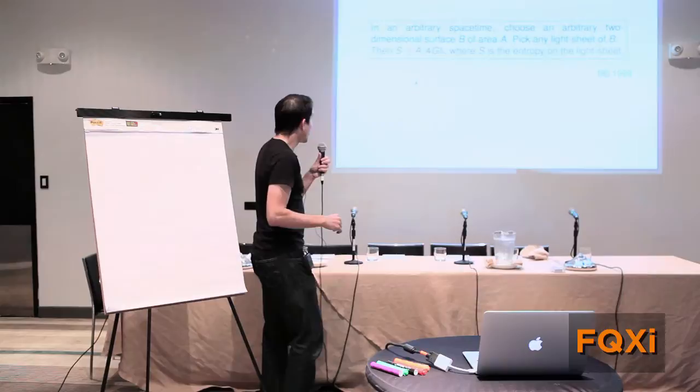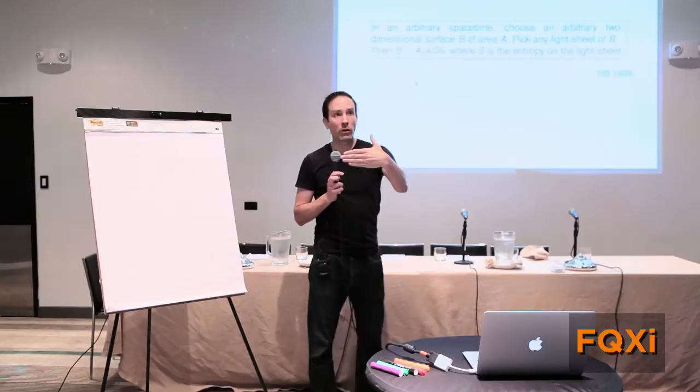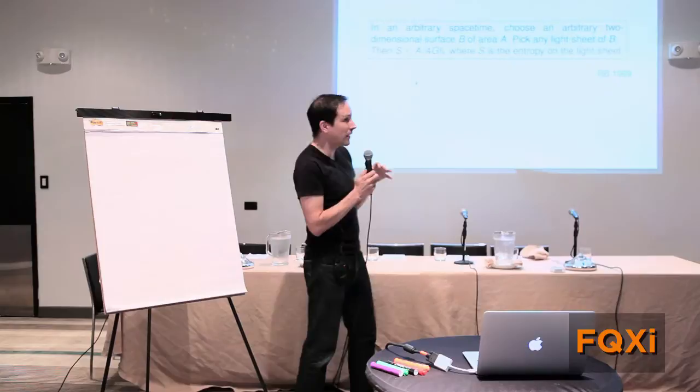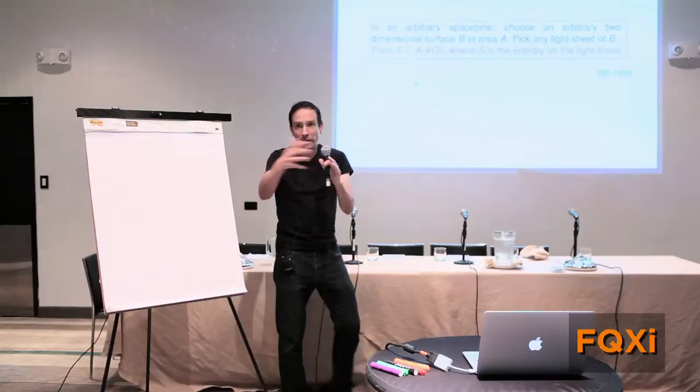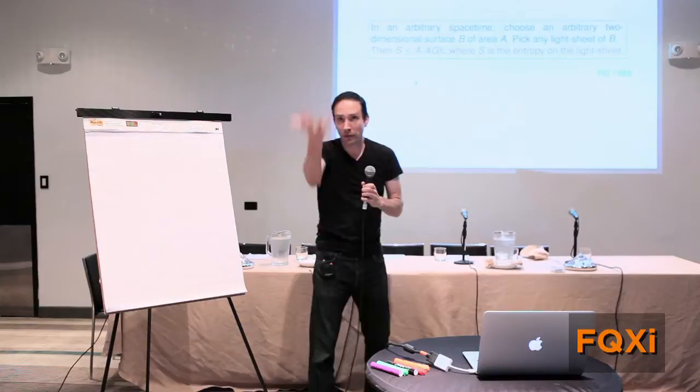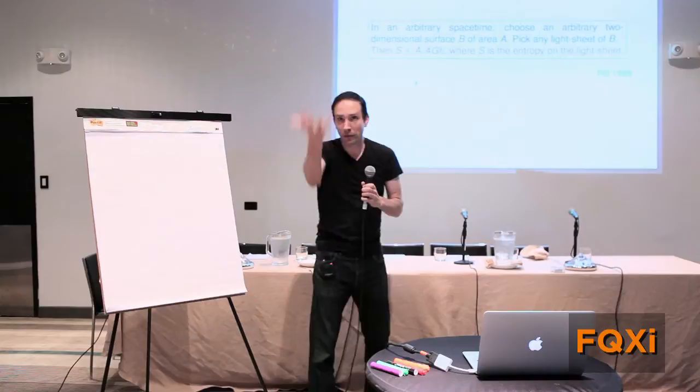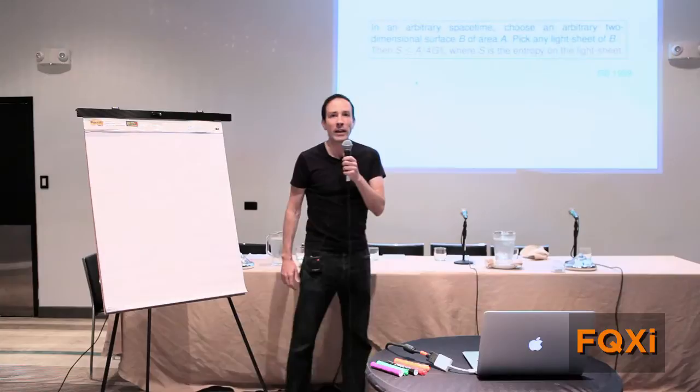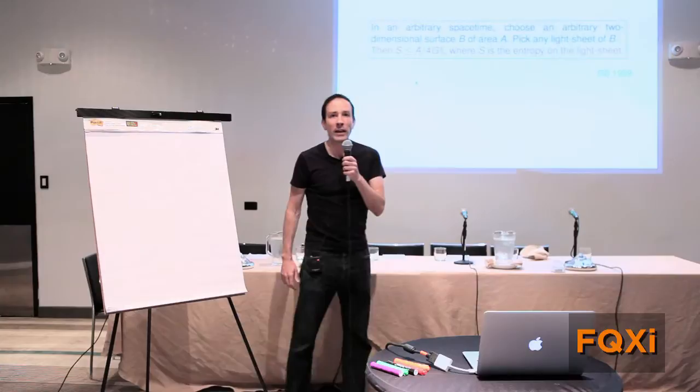So here's the statement. We're ready for the statement of the covariant entropy bound. It's a conjecture. In an arbitrary space-time, choose an arbitrary two-dimensional surface B. It doesn't have to be closed, by the way, because of the fact that these things are all locally defined. Of area A. And then pick any of the possibly multiple light sheets that you can construct away from B. And then what's supposed to be true is that the entropy of the matter that's captured on this light sheet is less than the original area in Planck units. So I've suppressed the speed of light, which would make an appearance here, but I've kept G Newton and h bar. And G h bar is the square of a length scale, the Planck length, which is 10 to the minus 33 centimeters. It's a very small length. So the number of qubits that is the upper bound in the entropy, you can visualize by putting little Planck tiles, 10 to the minus 33 centimeters on each side, on the initial surface. For this room, that'd be a rather large number. But it's interesting that it goes like the area.